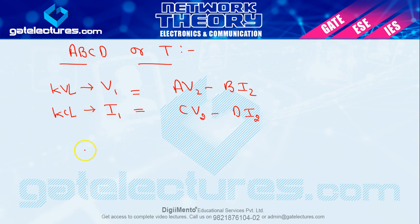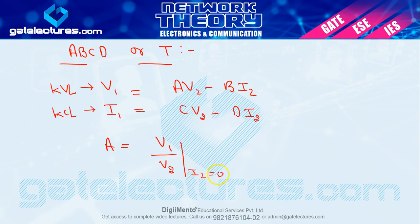अब definition wise A की value calculate करें। A is equal to V1 upon V2, और condition होगी I2 = 0। तो A हो गया voltage upon voltage, that is unitless। और जैसा last video में बताया था, 1 by 2 form में होने पर यह inverse voltage gain होता है, so A is inverse voltage gain.